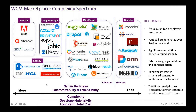Some key WCM trends: there's a lot of pressure on top-tier players from below, which is why many are acquiring. We still see platform-as-a-service more predominant than software-as-a-service. There's still significant competition around usability — the interfaces can be dramatically different. Vendors are beginning to externalize segmentation and personalization outside the web channel, there's renewed interest in structured content for multi-channel distribution, and Forrester and Gartner continue to miss the incredible breadth of this marketplace.